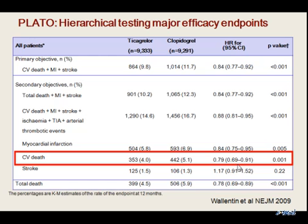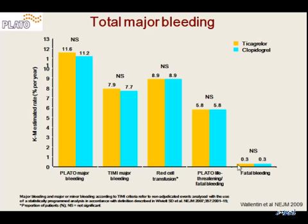But certainly, the cardiovascular mortality reduction is important. What was the price to pay in major bleeding? If you look at major bleeding according to the PLATO definition or the TIMI definition, there was no difference in major bleeding. If you look at transfusions, which is a fairly standard way of looking at major bleeding, the need for transfusion was identical in the two groups. Life-threatening bleeding was identical. And fatal bleeding was identical, 0.3%, very rare.